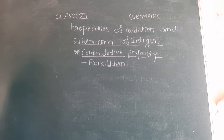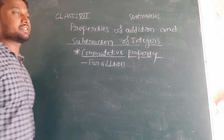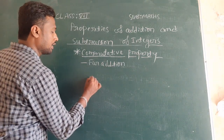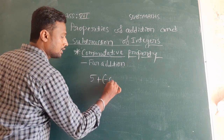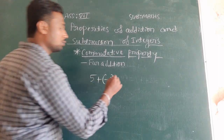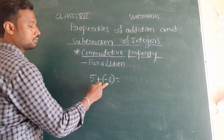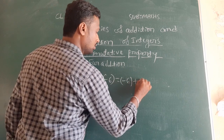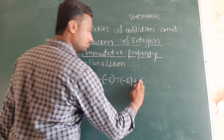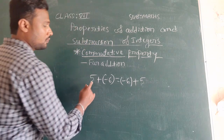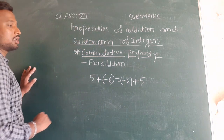We will try to add two integer values. I will consider 5 and minus 6 as two integers. So if a equals 5 and b equals minus 6, I will check whether 5 plus (minus 6) and (minus 6) plus 5 are equal or not.